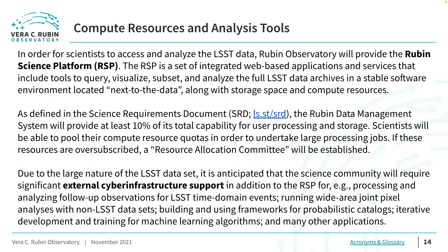Scientists will be able to pool their compute resource quotas in order to undertake larger processing jobs. If the compute resources provided by Rubin Observatory are oversubscribed, a resource allocation committee will be established. However, due to the unprecedentedly large nature of the LSST data set, it is anticipated that some specialized algorithms, data products, and analysis tools left to the science community will require significant external cyber infrastructure support in addition to the RSP. A few examples include processing and analyzing follow-up observations for LSST time domain events, running wide-area joint pixel analyses with non-LSST data sets, building and using frameworks for probabilistic catalogs, iterative development and training for machine learning algorithms, and many other applications in the big data era of the LSST.